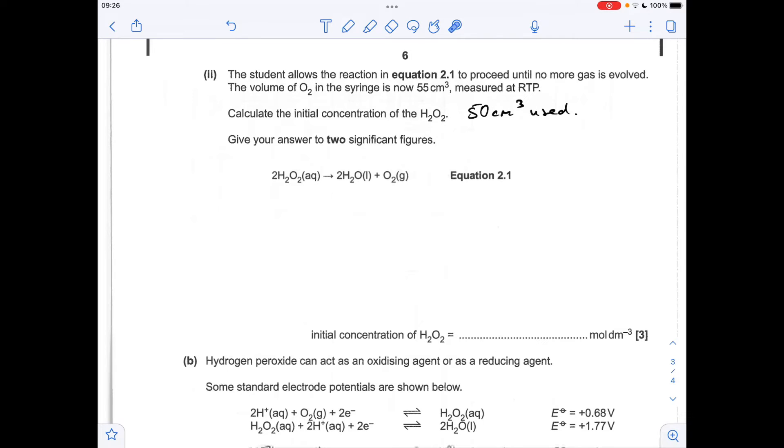So we're going to use the molar gas volume because we've got this RTP information. So 55 cm cubed, if we divide that by 24,000, that's the molar gas volume in centimeters cubed, we get that many moles of oxygen.